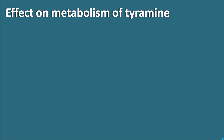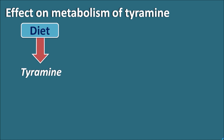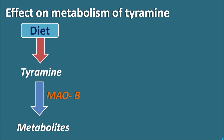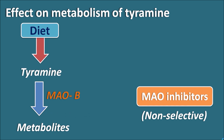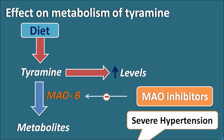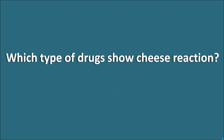The second mechanism involves the effect of MAO inhibitors on tyramine metabolism. Whatever tyramine-rich diet we take is absorbed into the systemic circulation and then metabolized by the enzyme MAO-B — monoamine oxidase type B. When non-selective MAO inhibitors are used, they inhibit both MAO-A and MAO-B enzymes, thereby inhibiting the metabolism of tyramine. MAO-B is a constitutive enzyme present in plasma that controls the metabolism of amine-type substances like tyramine. Non-selective MAO inhibitors thus increase tyramine levels within the body, producing severe hypertension — the cheese reaction.